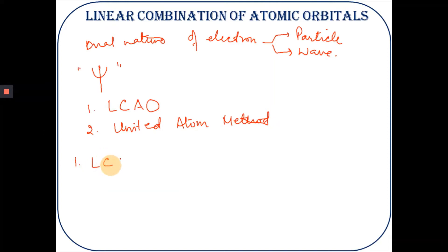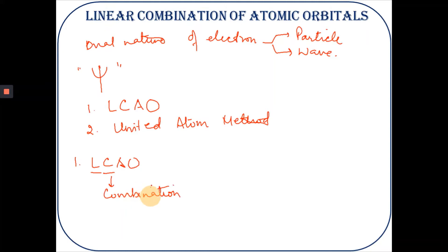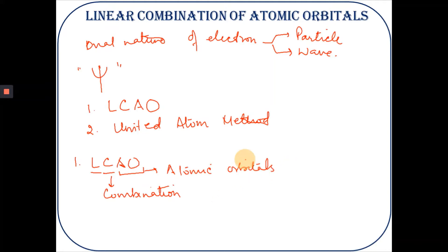Let's start with the linear combination of atomic orbitals. As the name suggests, it is a linear combination — a combination of two or more atomic orbitals. Different combinations will occur, and this is how molecule formation takes place.